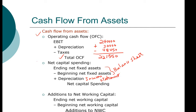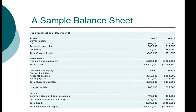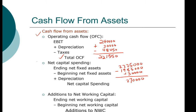I'm going to have you pause the video and try to work this one out on your own. Go back to the sample balance sheet, find the ending net fixed assets minus beginning net fixed assets plus depreciation, and compute net capital spending. Here's our sample balance sheet: year one is the ending number and year zero is the beginning number. For net fixed assets, subtract the beginning value from the ending value. The answer is $270,000.